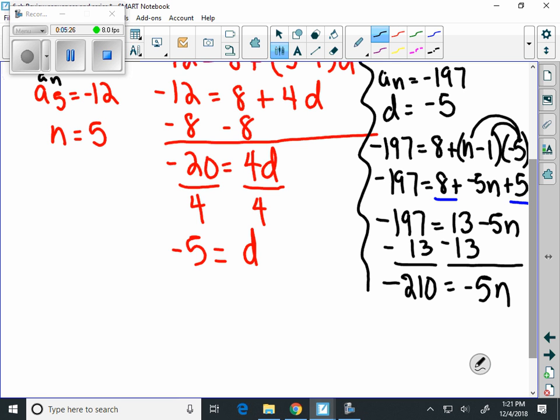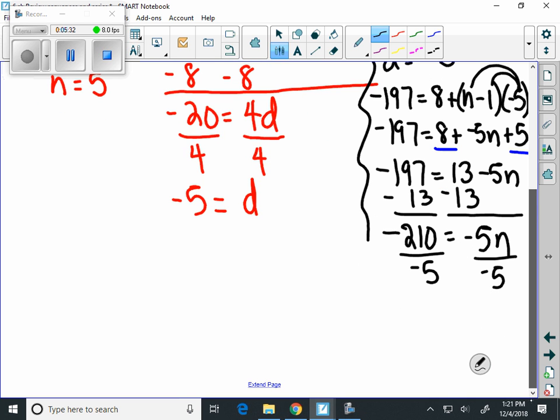And finally when we divide both sides by negative 5, you can type that in your calculator, we're going to get our answer to this problem, which is n equals 42.